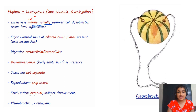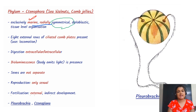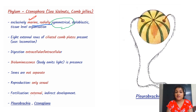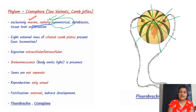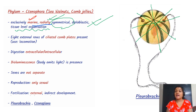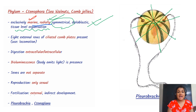Ctenophores are exclusively marine and radially symmetrical. They are diploblastic and have tissue level of organization. So now we have come from cellular level of organization to tissue level organization. They have eight external rows of ciliated comb plates.